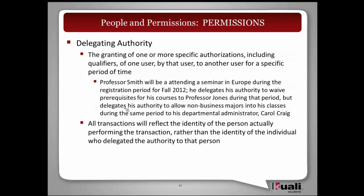Delegating authority is meant for the short term — it's not giving somebody authority going forward permanently. The idea is that I would be able to grant my specific authorities to somebody else. For example, I'm going on a business trip for three weeks and I need somebody to be able to waive prerequisites so students can register in a course. One key point on delegating authority: even though a person has been granted permission to do a certain activity, the system will note who actually did that — so if I've been delegated by Professor Smith to grant an exemption, the system will indicate that I did it and not Professor Smith.